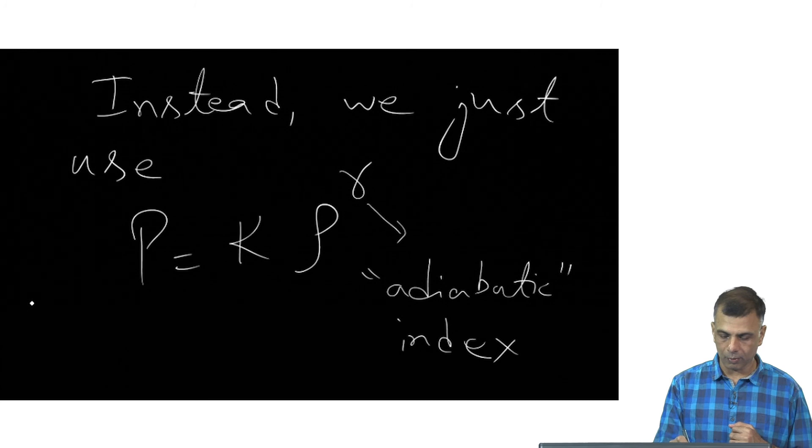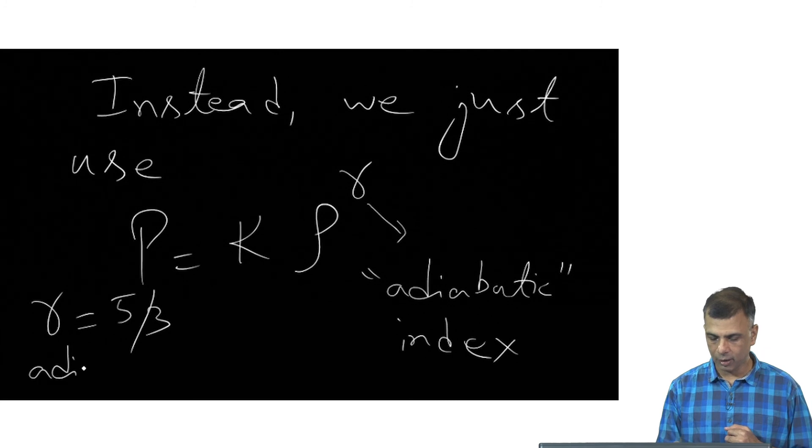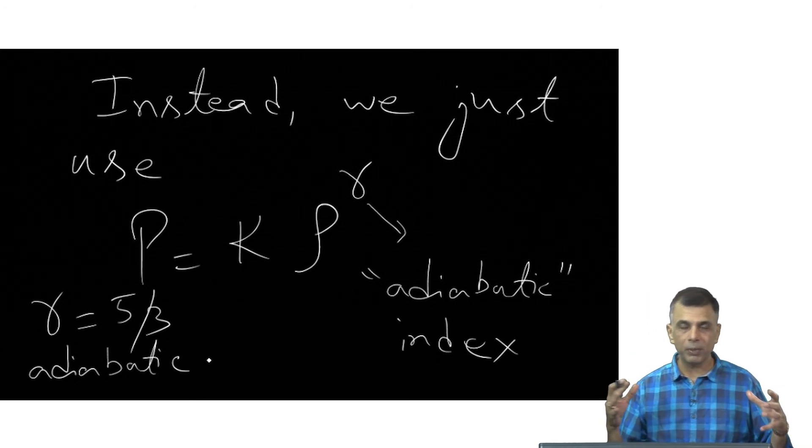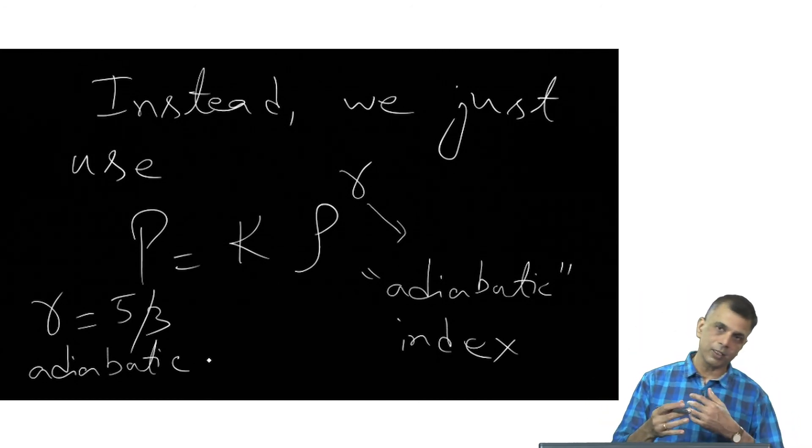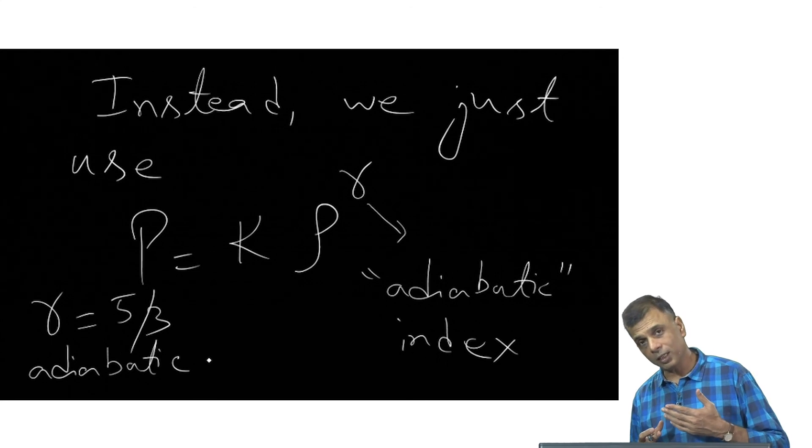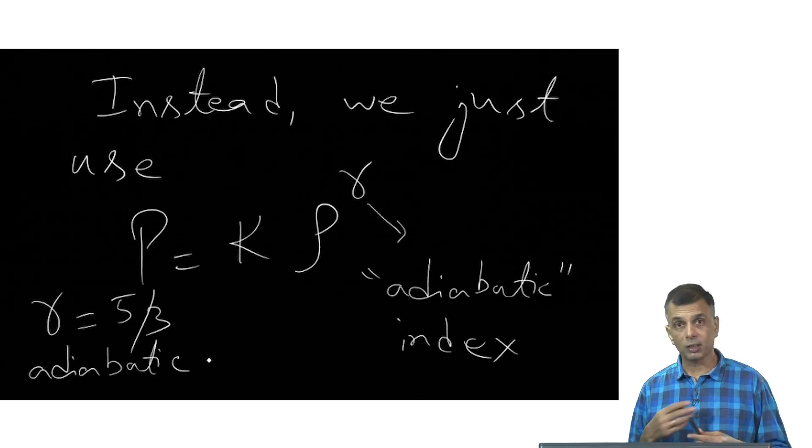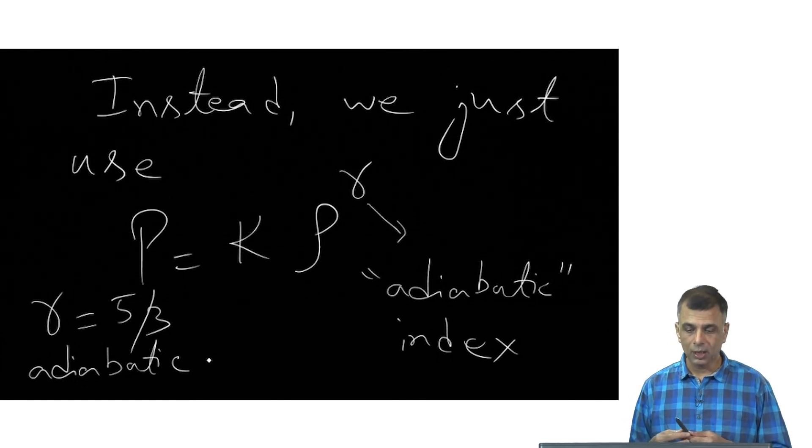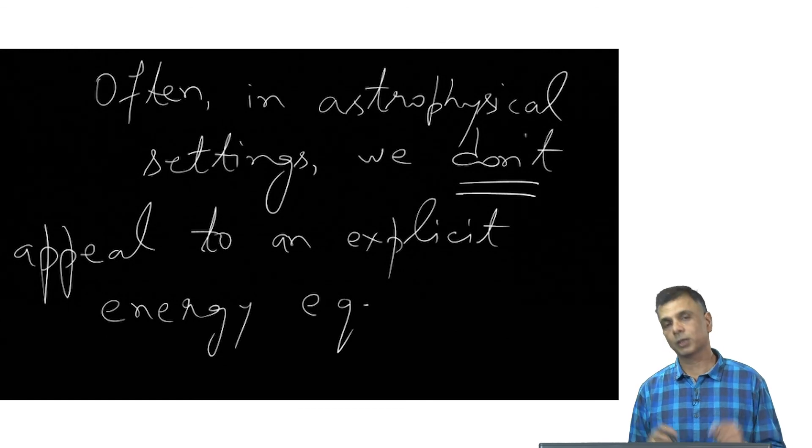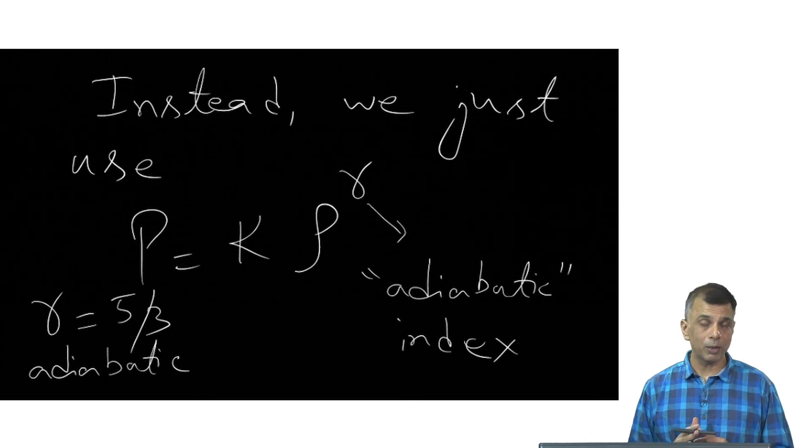And if gamma equals five thirds, it's adiabatic, in other words, the system is closed and any PdV work that you do appears in internal energy and vice versa. And if gamma is one, then it's isothermal. And in principle, it can be anything in between. And it's this gamma which tells you everything about the energy processes, energy dissipation processes. So many times in astrophysics, as I said, we don't really appeal to an explicit energy equation. Instead, we use something like this.